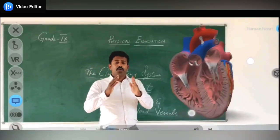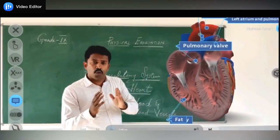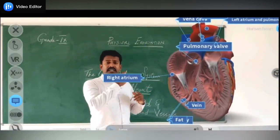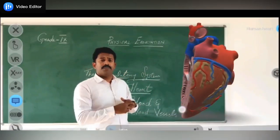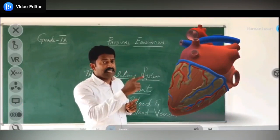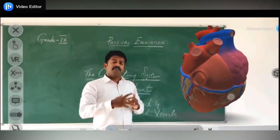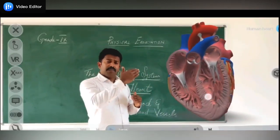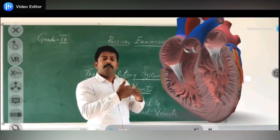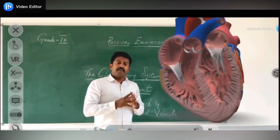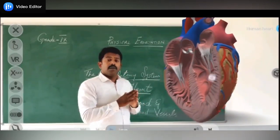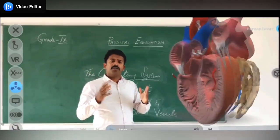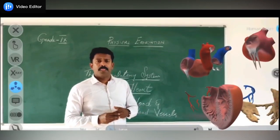To summarize: the superior and inferior venae cavae bring deoxygenated blood to the first chamber, the right auricle. The tricuspid valve opens and it goes to the right ventricle. With the help of the pulmonary artery it goes to the lungs, gets oxygenated, and returns via the pulmonary vein to the left auricle. The bicuspid valve opens, it goes to the left ventricle, and with the help of the aorta the oxygenated blood is circulated to all parts of the body.